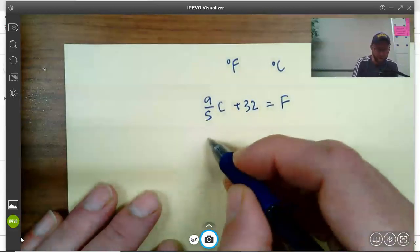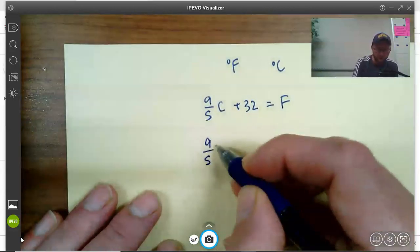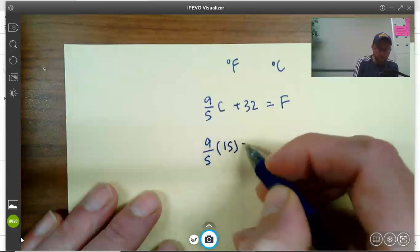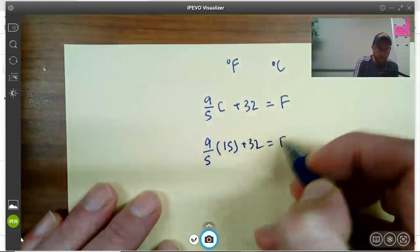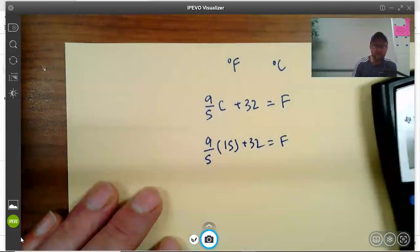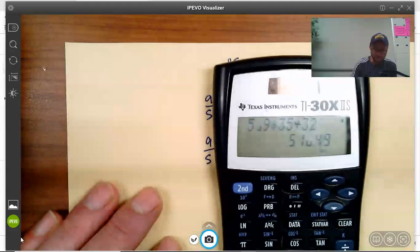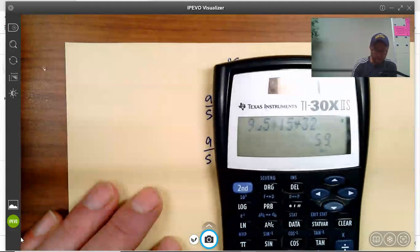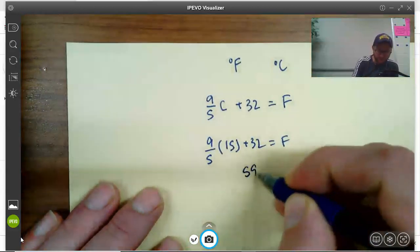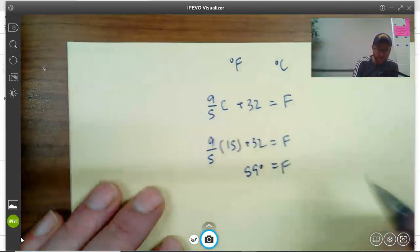Let's do a couple of samples. I want to take 15 degrees Celsius and find out what that is in Fahrenheit. So I take 15 times nine-fifths and add 32. Let's see: 9 divided by 5 times 15 plus 32 equals 59 degrees. So it's 59 degrees Fahrenheit.